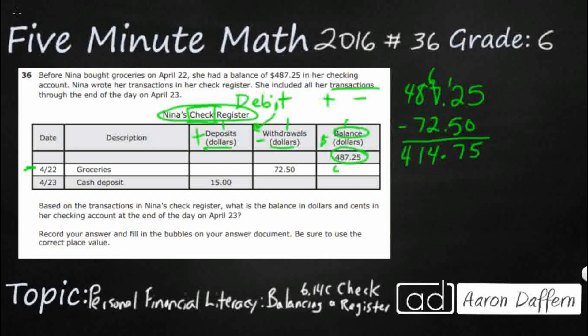We take that $414.75 and write it right underneath as our new balance. You bring this balance down for every single transaction — every time you have a new deposit or withdrawal, you calculate a new balance. Now let's add in that $15 cash deposit. Making sure we line up our decimals: $15.00. That gives us $429.75.